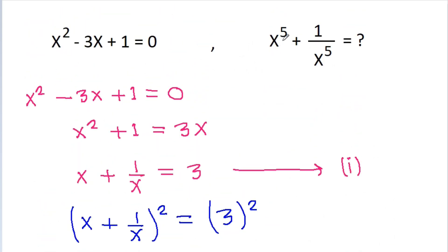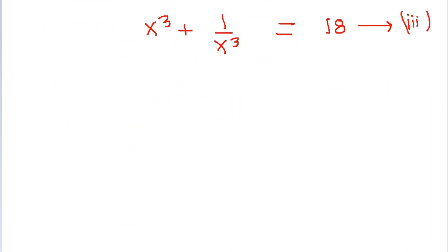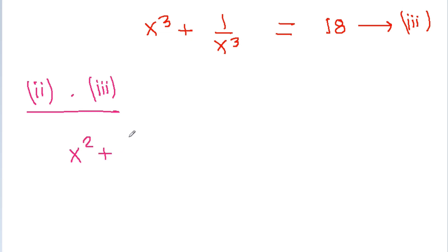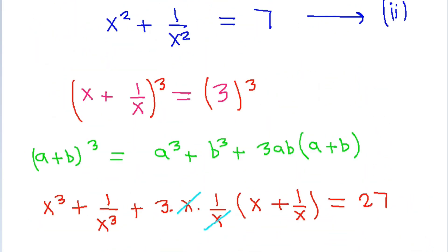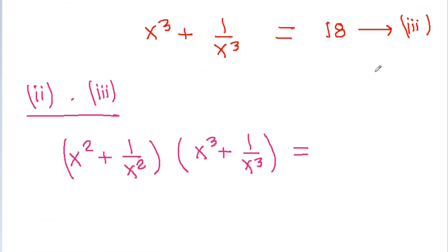Now we have to find the value of x to the power 5 minus 1 by x to the power 5. If we multiply Equation 2 and Equation 3: Equation 2 is x squared plus 1 by x squared equals 7, and Equation 3 is x cubed plus 1 by x cubed equals 18. So we get 7 times 18. Expanding: x squared times x cubed gives x to the power 5.